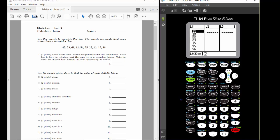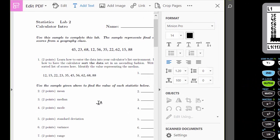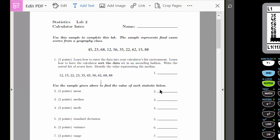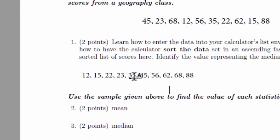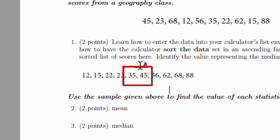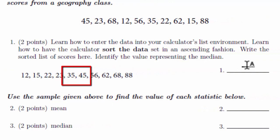Once we've got our data sorted in ascending fashion, it should be easy to find the median. Recall that the median is the number right in the middle of the sorted data. For this data set, we have an even number of entries — there are 10 data values — so there's no single number in the middle. To find the median, locate the middle two numbers. That's 35 and 45, and the midpoint between them is 40, so the median is 40.